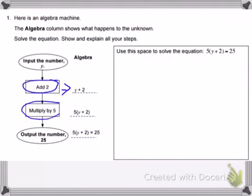Then it says we multiply by 5. So if you look across to the algebra column, you see that the sum of y plus 2 that we did in the last step is now multiplied by 5. That's why there's parentheses, because we had to multiply the whole sum.